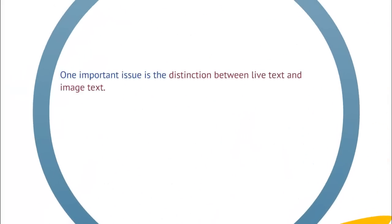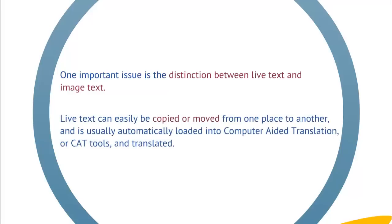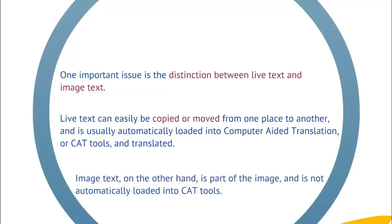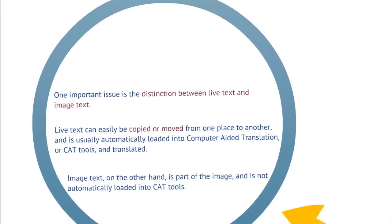One important issue is the distinction between live text and image text. Live text can easily be copied or moved from one place to another and is usually automatically loaded into computer-aided translation, or CAT tools, and translated. Image text, on the other hand, is part of the image and is not automatically loaded into CAT tools.